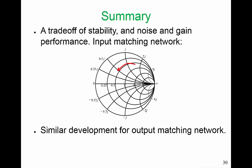In summary, these circles enable a trade-off of stability and noise and gain performance. We focus mostly on the input matching network because that is the first one that you design. Once you've designed that, you then move on and design the output matching network.